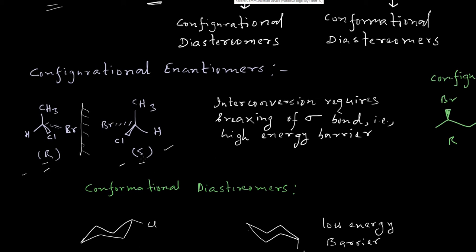The absolute configuration of one molecule is R whereas the absolute configuration of the other molecule is S. In this situation, simple rotation is not a way to interconvert between these two molecules. The only way to interconvert them is the breaking of a sigma bond — for example, breaking the bromine-carbon bond and interchanging the chlorine atom's position. Since breaking a sigma bond requires very high energy, this is an example of configurational enantiomers.